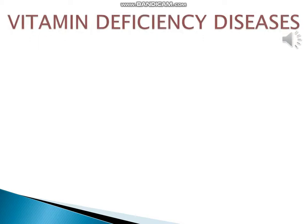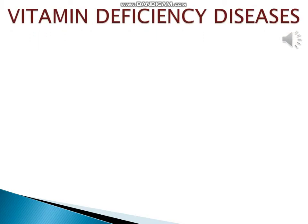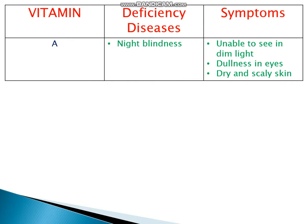The last category is vitamin deficiency. Vitamins A, B, C, and D cause different diseases due to their deficiency. Deficiency of vitamin A causes night blindness, which shows symptoms like inability to see in dim light, dullness in eyes, and dry and scaly skin.